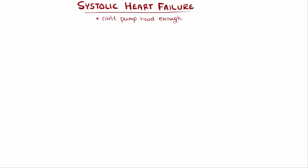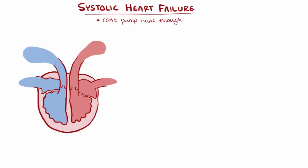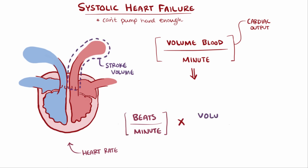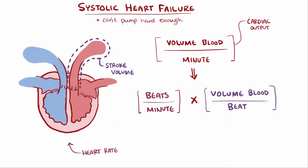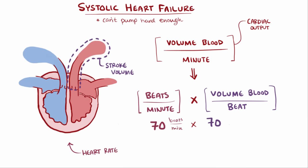Systolic heart failure can be understood mathematically: the heart needs to squeeze out a certain volume of blood each minute, called cardiac output, which equals the heart rate — the number of beats per minute — multiplied by the stroke volume, the volume of blood squeezed out with each heartbeat. For example, an adult heart beating 70 times per minute with the left ventricle squeezing out 70 milliliters per beat gives a cardiac output of 4,900 milliliters per minute, which is almost 5 liters per minute.